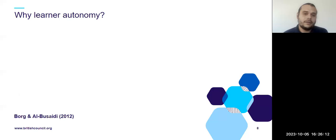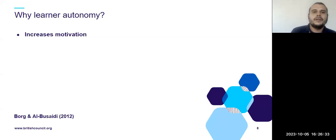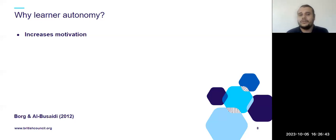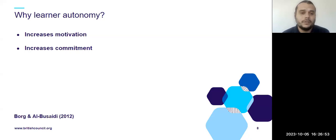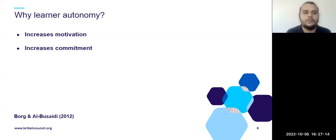Why is learner autonomy important, especially in non-English-speaking environments like Venezuela where students can't go out and practice with people on the street? First, autonomous learners are motivated — they can see results, they know why they're learning English, they like what they're doing, and they know what they need to work on. It also increases commitment because they are involved: they choose and take decisions, so the activities in class are not just what the teacher decided — they had a voice and a vote.